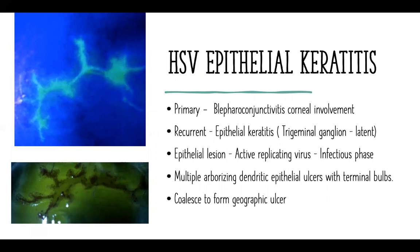HSV epithelial keratitis: primary disease occurs as a blepharoconjunctivitis with minimal corneal involvement. It is mostly in recurrent cases that you see epithelial keratitis as a dendrite — this is latent infection in the trigeminal ganglion that has reactivated. An epithelial lesion represents an active replicating virus in its infectious phase. Multiple arborizing dendritic epithelial cells with terminal buds are pathognomonic of a dendritic ulcer. When these coalesce, they form a geographic ulcer, showing a double-staining pattern — fluorescein in the center and rose bengal at the peripheries.